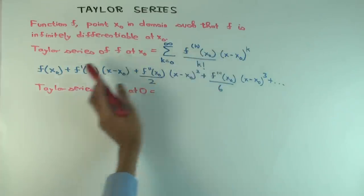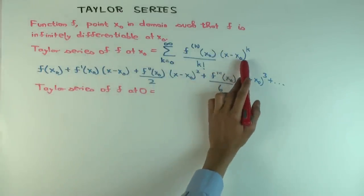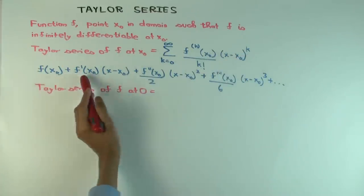And f 0 of x0 is just f of x0. And now you're multiplying it by what? x minus x0 to the 0. Again, and by convention, anything to the 0's power is taken to be 1. So that's why you get f of x0.